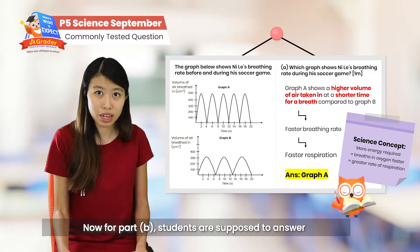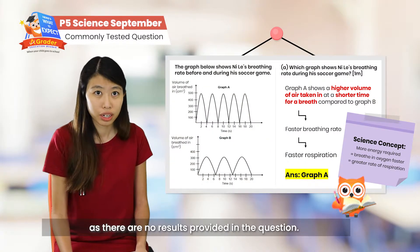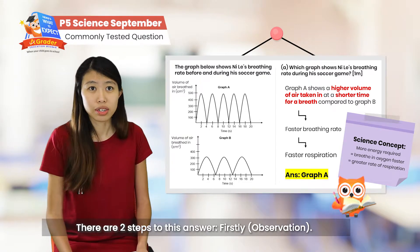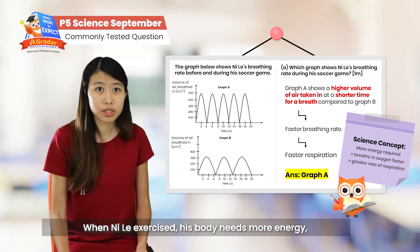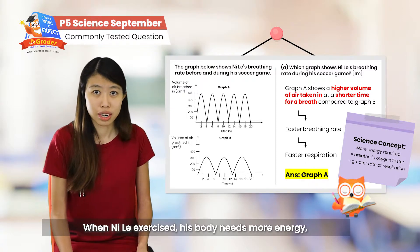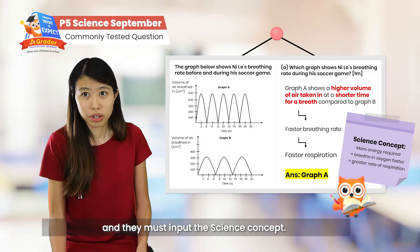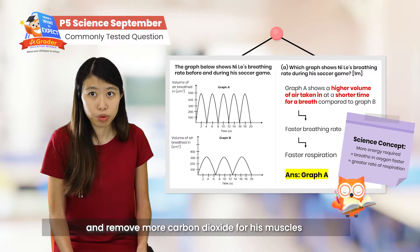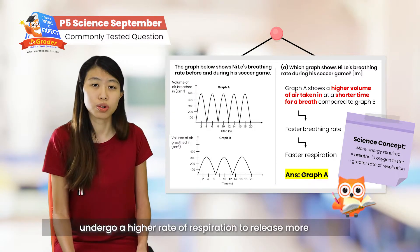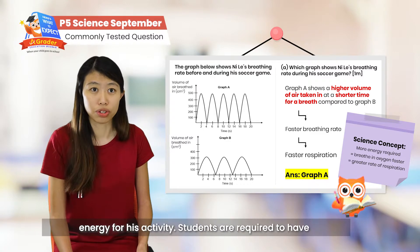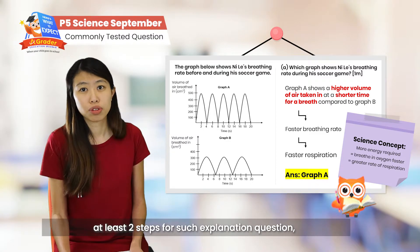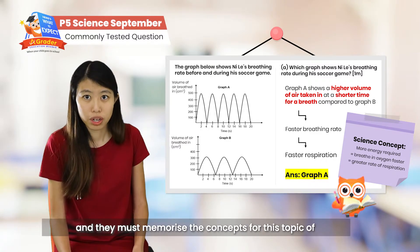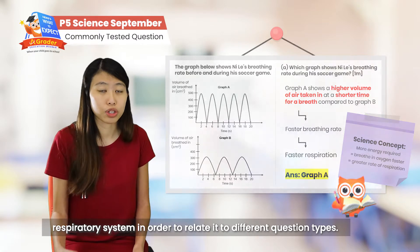For Part B, students are supposed to answer using the explanation answering technique. Since there are no results provided in the question, there are two steps to this answer. Firstly, observation: when this person exercises, his body needed more energy. Then, the science concept: he breathed faster and deeper to take in more oxygen and remove more carbon dioxide, for his muscles to undergo a higher rate of respiration to release more energy. Students are required to have two steps for such explanation questions and must memorise the concepts for this topic of the respiratory system in order to relate them to different question types.